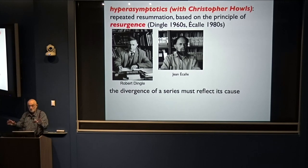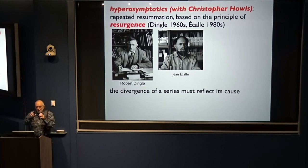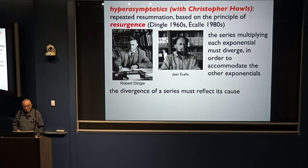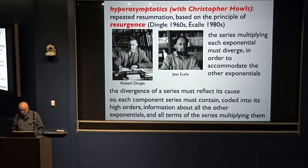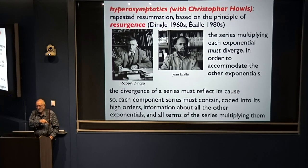It's this simple idea: series don't diverge for no reason. The divergence of a series must reflect its cause. We're talking about exponentials with series multiplying them, but there are other exponentials not captured by this first series. The cause of the divergence of a series is that there are other exponentials which have their own series as well, and it must diverge in order to accommodate them. Each component series must contain, coded into its high orders, information about all the other exponentials in terms of the series that multiply them.